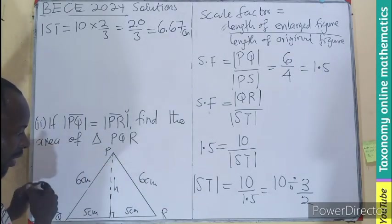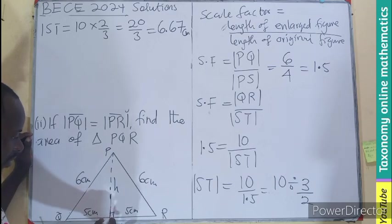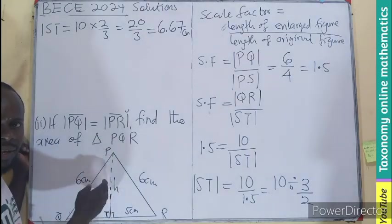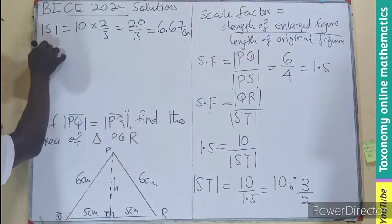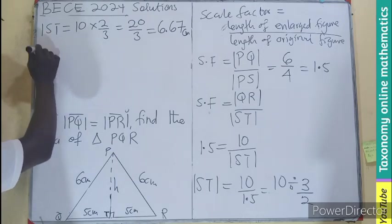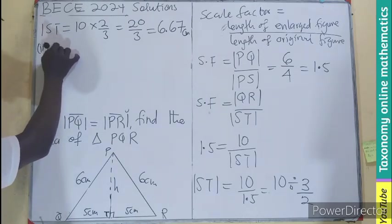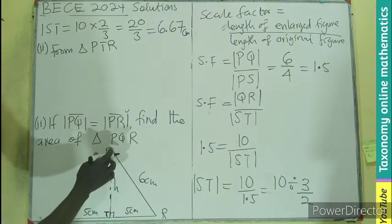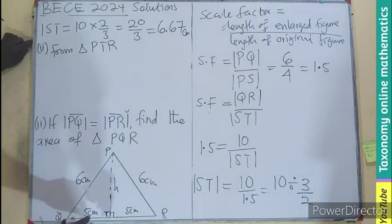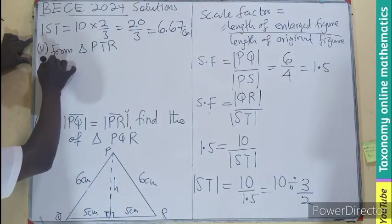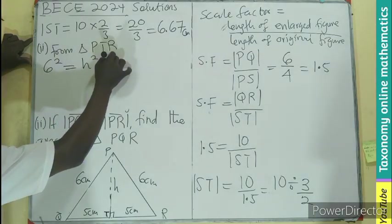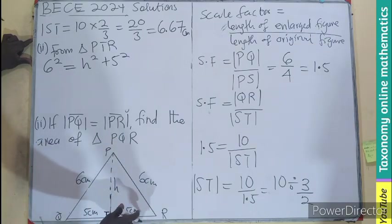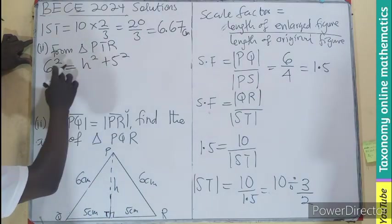Half the base times the height. So we need to know what the height also is. So from the triangle PTR, using the Pythagoras theorem, I'll be having 6 squared equals to H squared plus 5 squared. The hypotenuse is the longer side, the shorter side, addition, we are squares. So let's bring this one here. 36 minus 25 equals H squared.